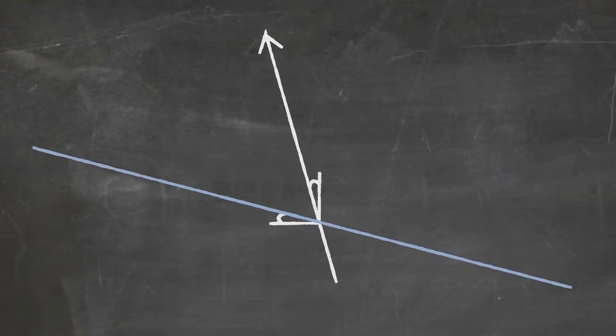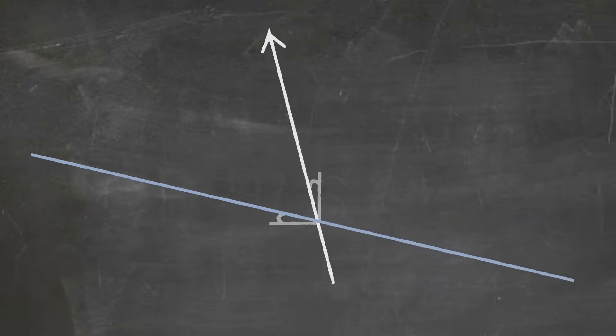And if the observer tilts in the other direction, the alligator mouth starts to close in the other direction. The simple rule for special relativity is that however much the observer's line tilts from the vertical, that's how much the hypersurface of simultaneity tilts from the horizontal. The angles are the same.